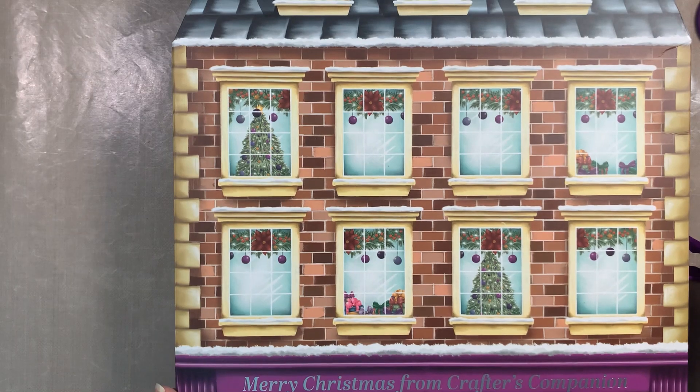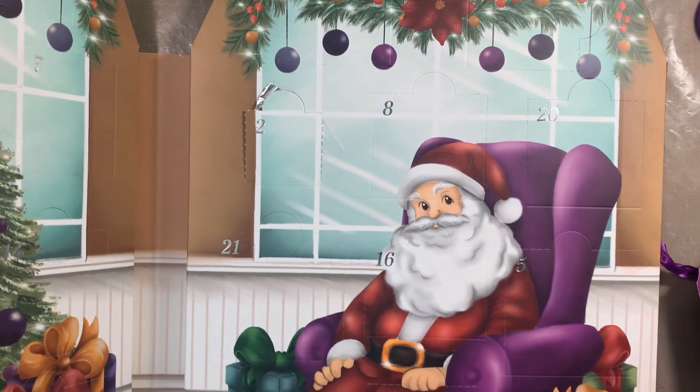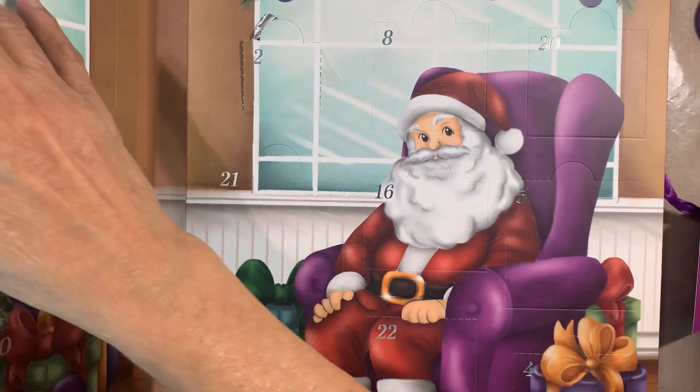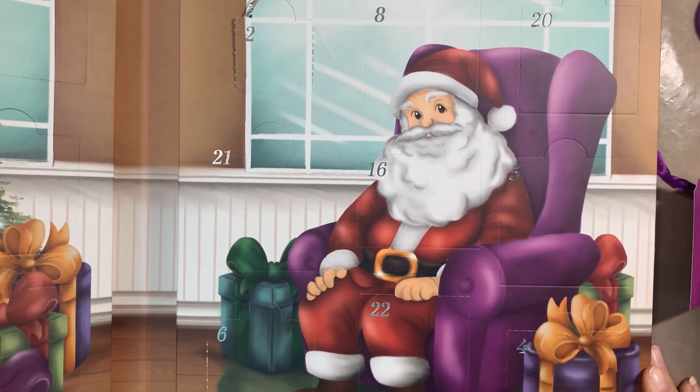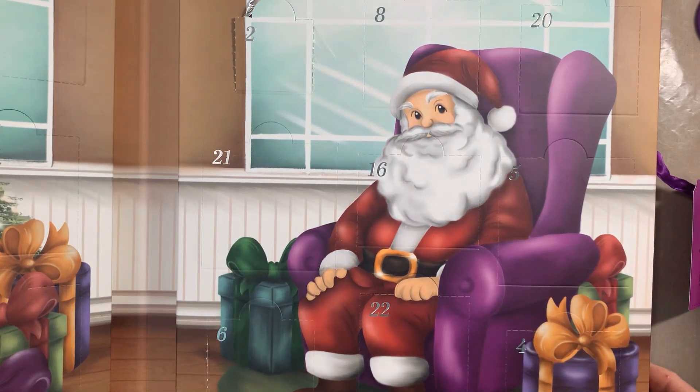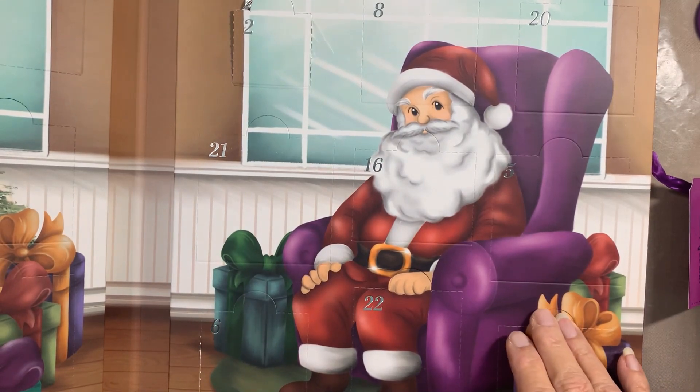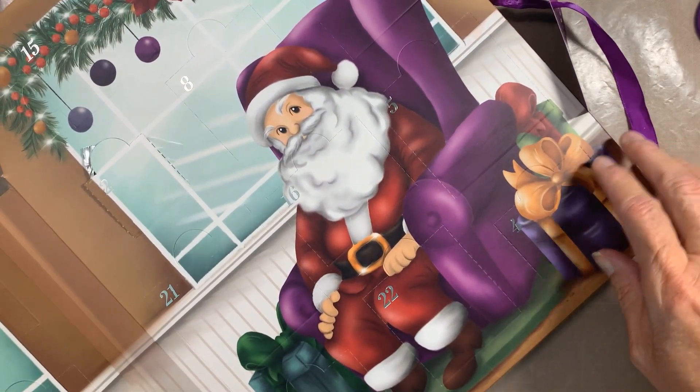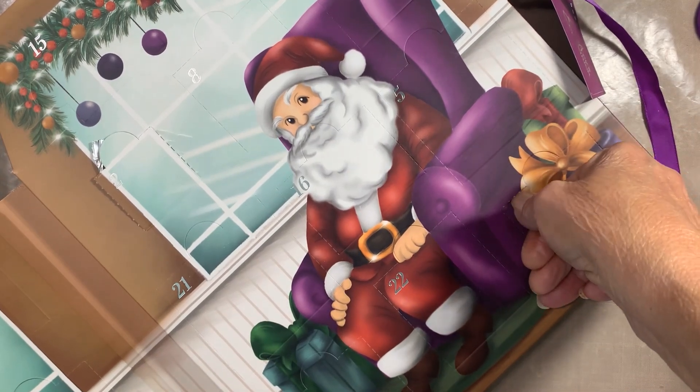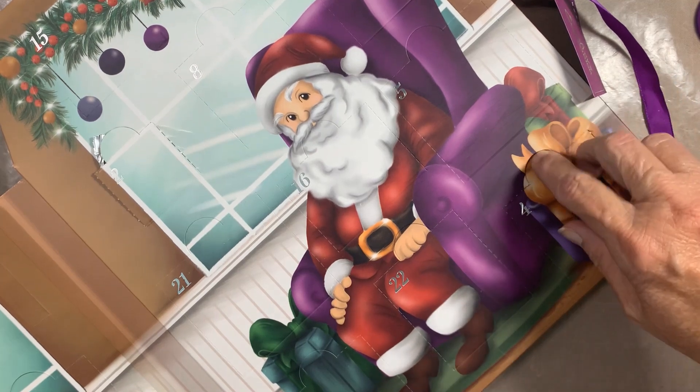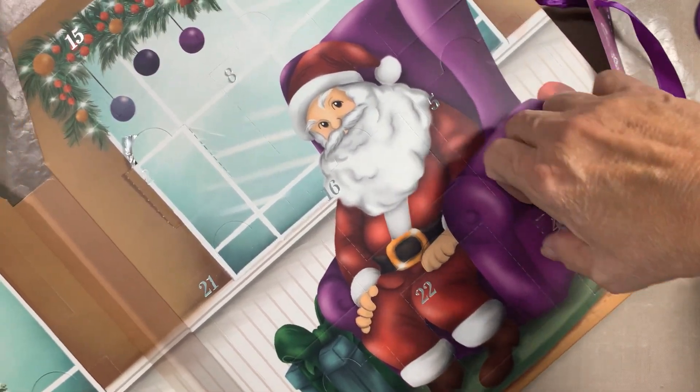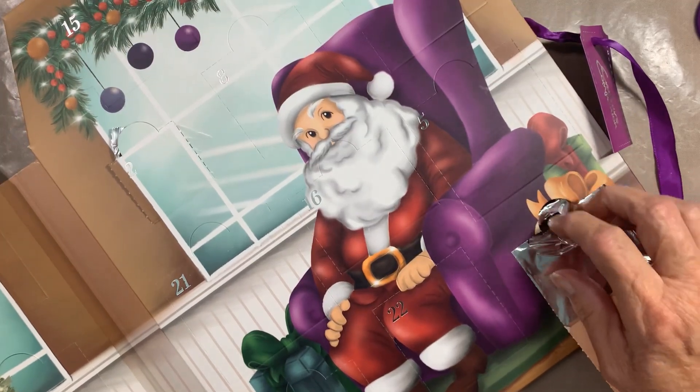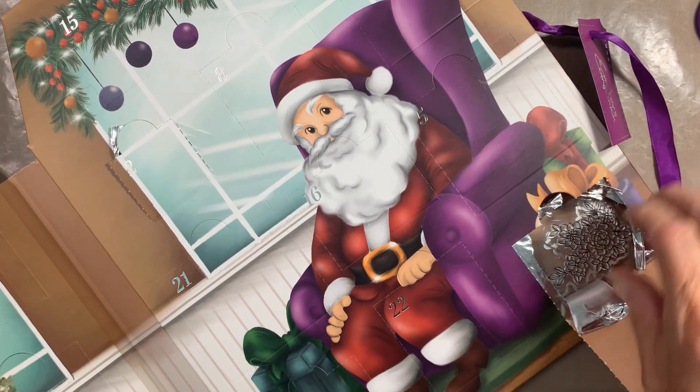We always start with Crafters Companions and we are looking for four and it's easy because four, five, and six are all going to be on the same side. Let's make sure that this one is so big that you can see. Maybe I'll turn it this way.